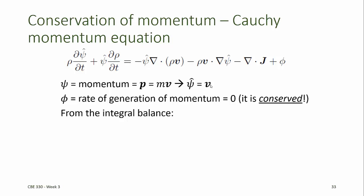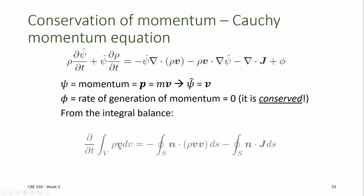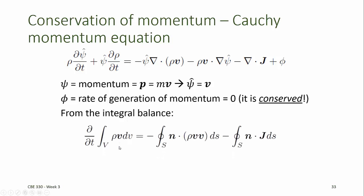We can then substitute velocity in for psi hat. Furthermore, the rate of generation of momentum should be zero, because momentum is a conserved quantity. So phi in this equation will go to zero. If we start from the integral balance and substitute velocity in for psi hat, we have an integral form of the balance equation that looks like this, which can now be simplified.